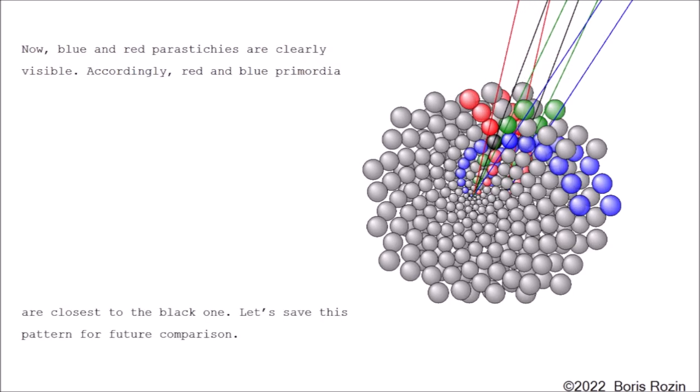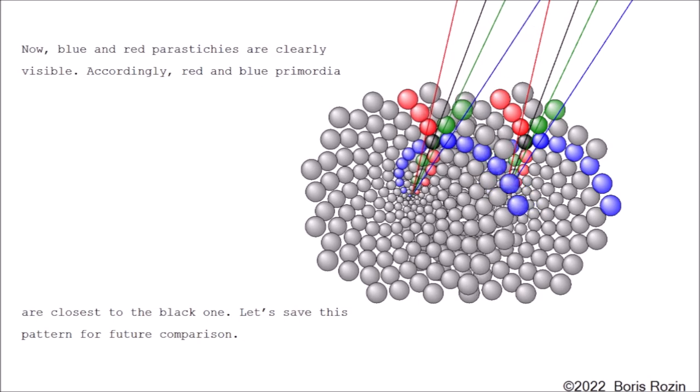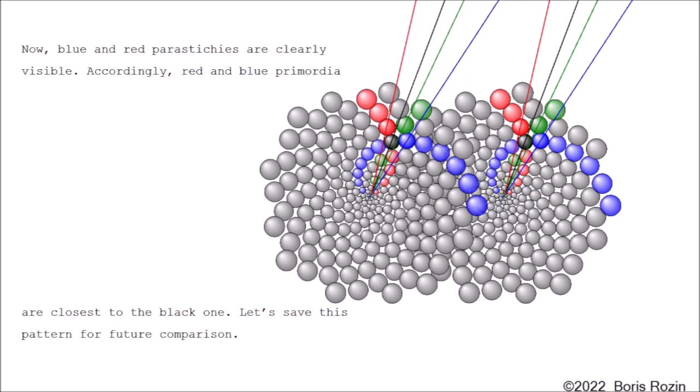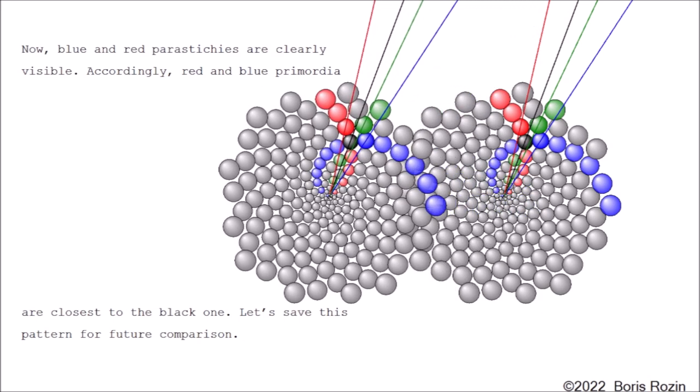Now, blue and red parastichies are clearly visible. Accordingly, red and blue primordia are closest to the black one. Let's save this pattern for future comparison.